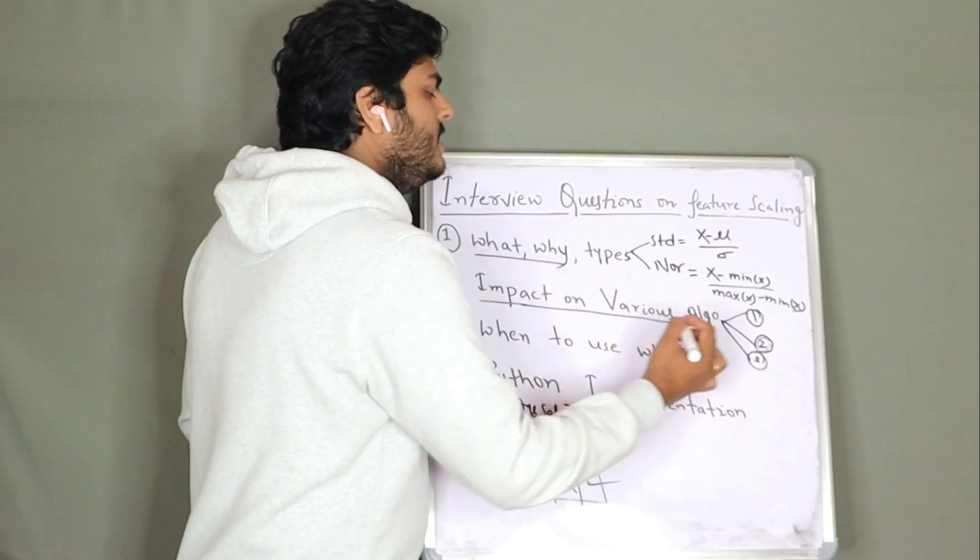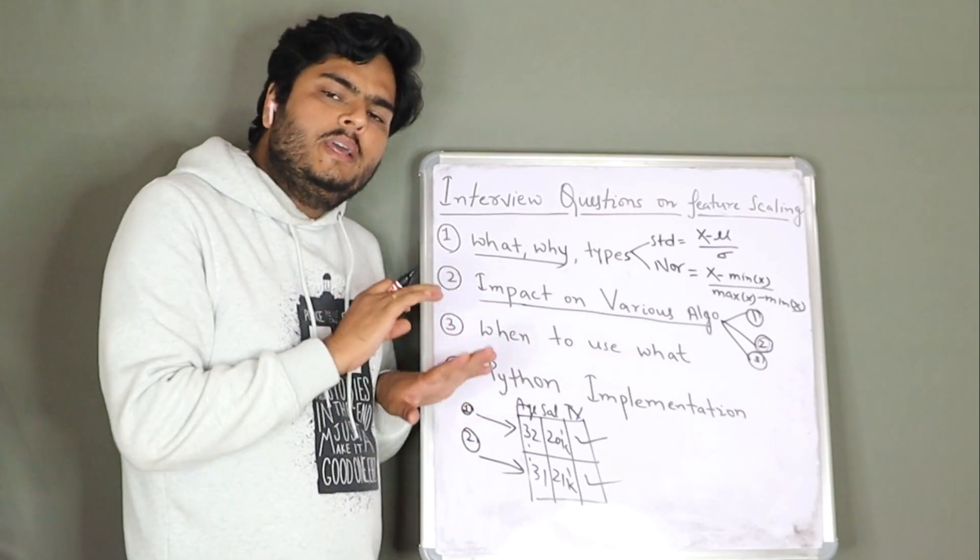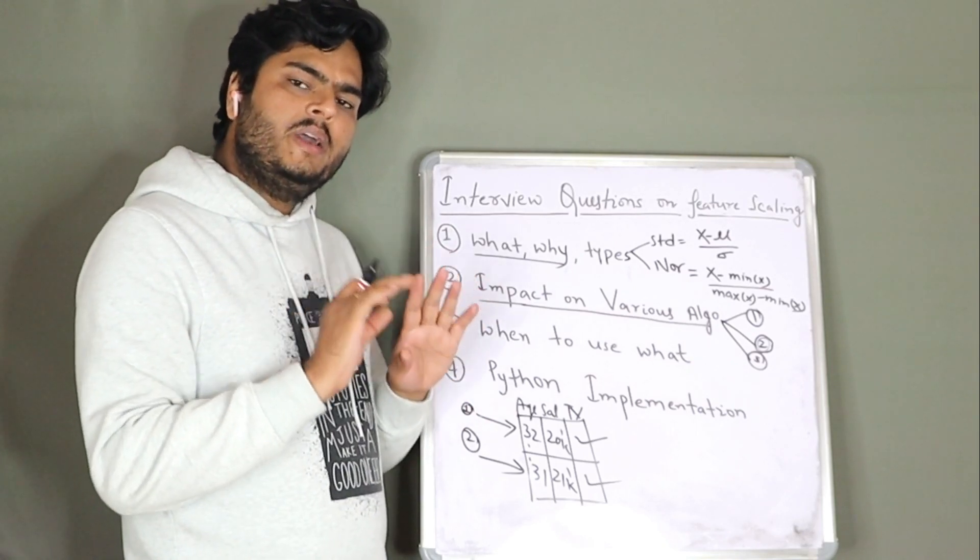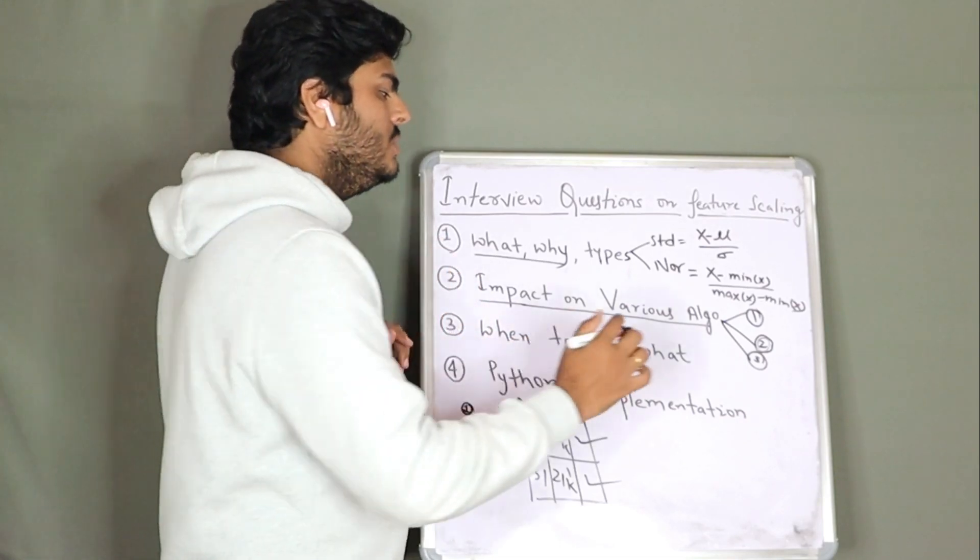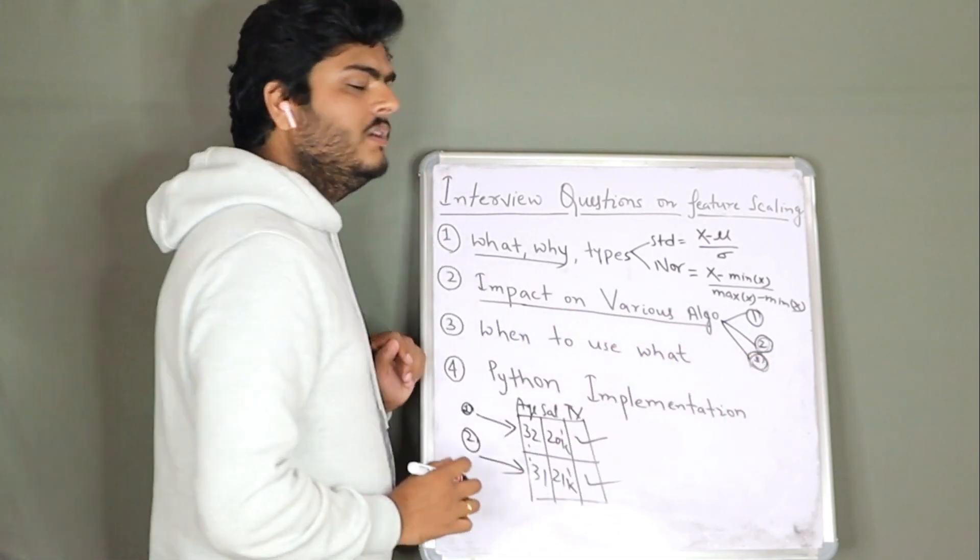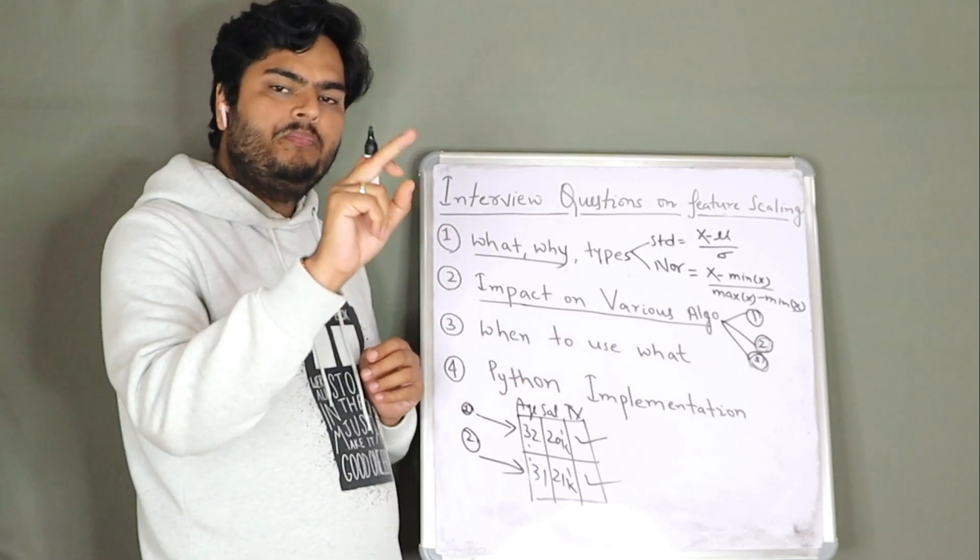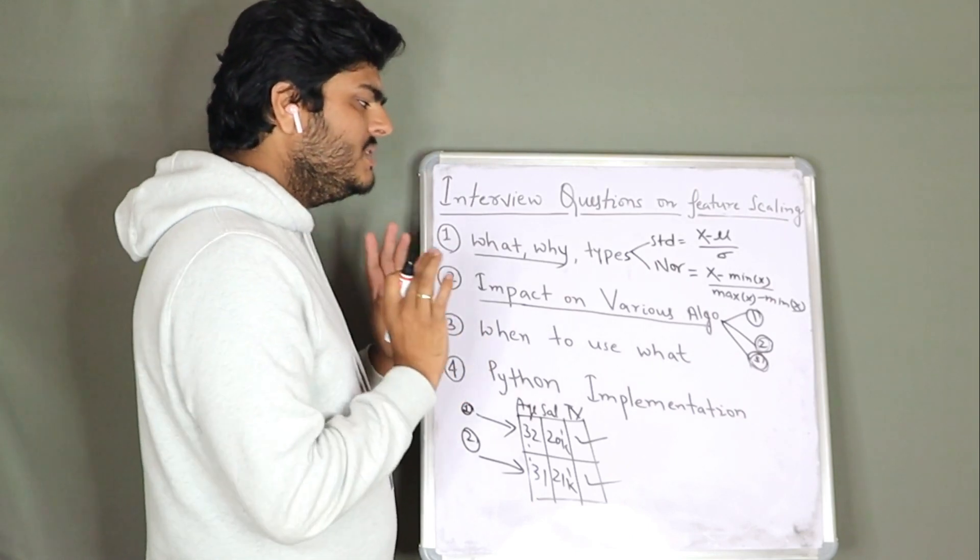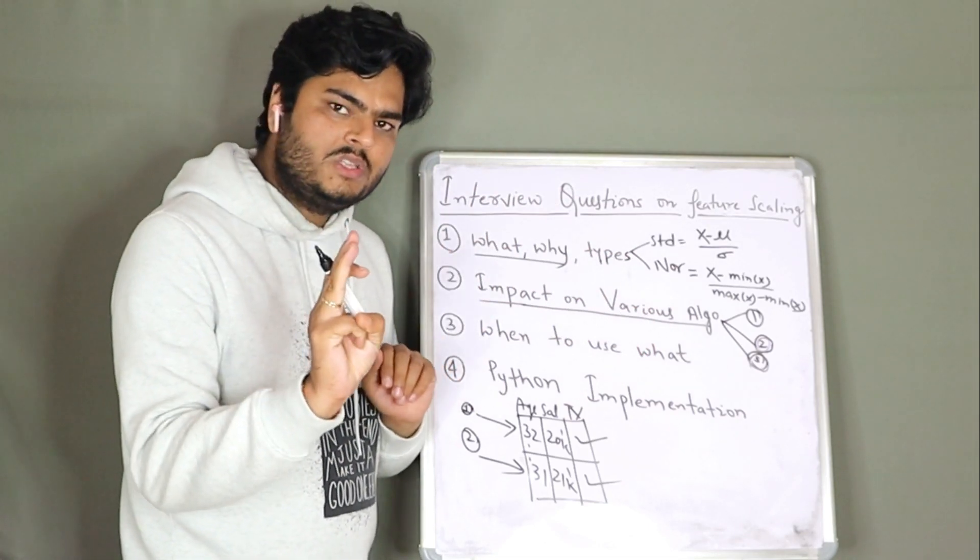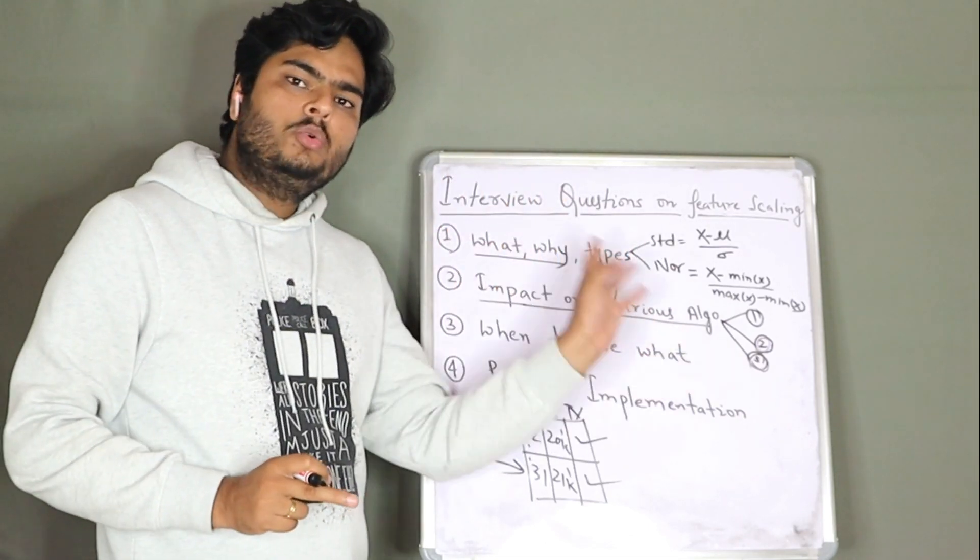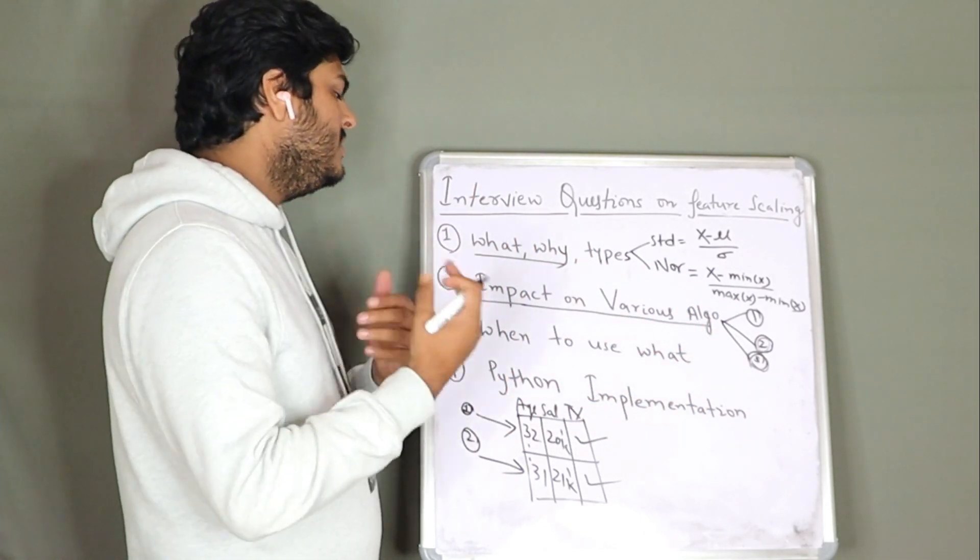And category number three is whether you do feature scaling or don't do, it doesn't matter. What kind of algorithm? Everything based on decision tree. Decision tree, bagging, boosting, ensemble, random forest, XGBoost, gradient boost. Everywhere, if you don't do, that is fine. Which means it will not get impacted. Because at the end of the day, your tree is breaking on one criteria. Remember these, people will ask you in interview, impact on various algorithm. You have to remember these three categories. First, must do. Second, good to do. Third, it's okay if you don't do. That is about what kind of impact on various algorithm.